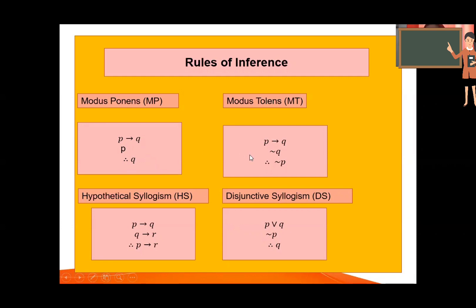Next, modus tollens. P implies Q, negation of Q, therefore negation of P.